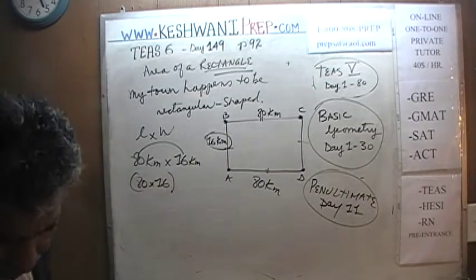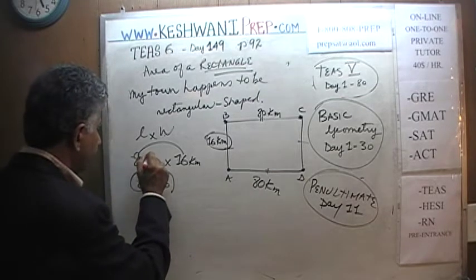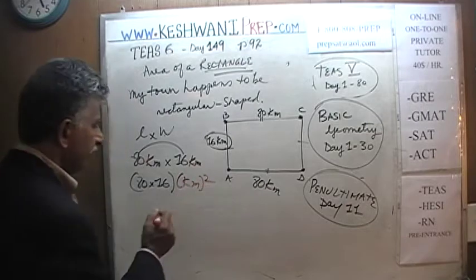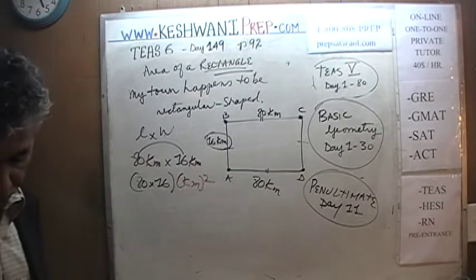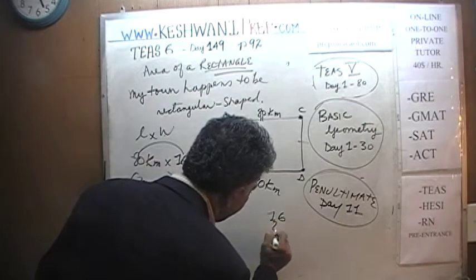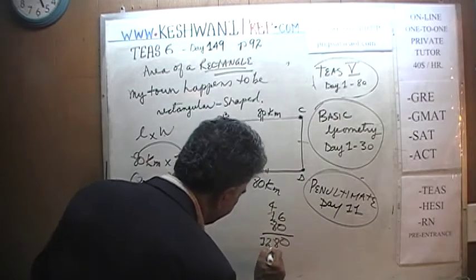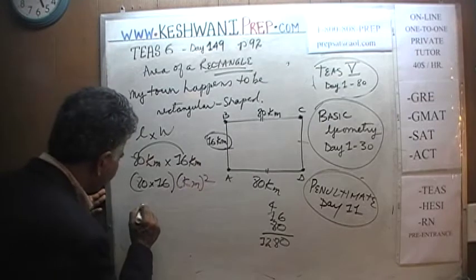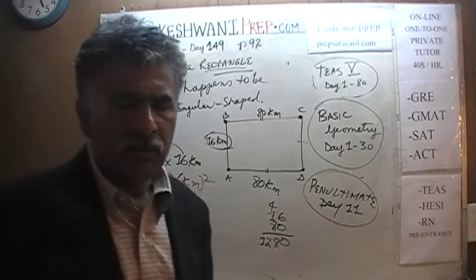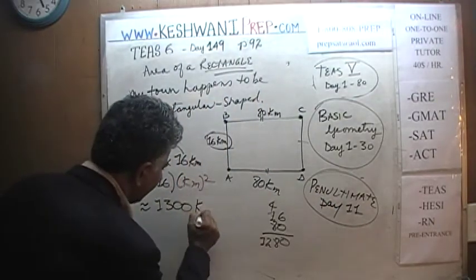The important part is that we have to square our units. You must square the units — kilometers times kilometers, which is the same as kilometers squared. Let's find out what 16 times 80 is: 16 times 80 — that gives us 1280, approximately 1300. And 1300 what? It must have a unit. 1300 kilometers squared.